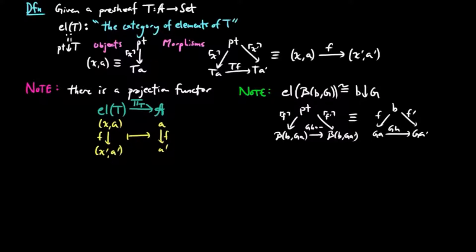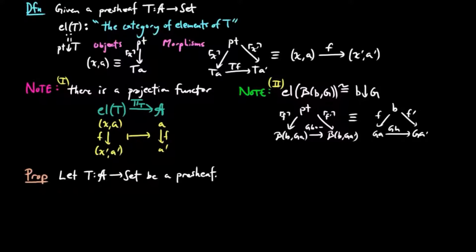We will now translate the terms in the general representability theorem to conditions on categories of elements. First, let T be a pre-sheaf on A. If A is idempotent complete, then so is the category of elements of T.